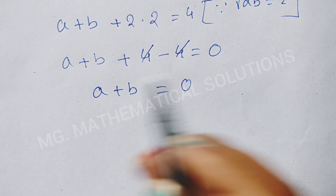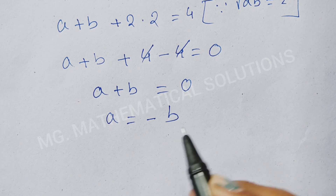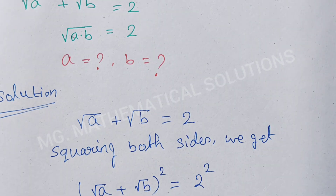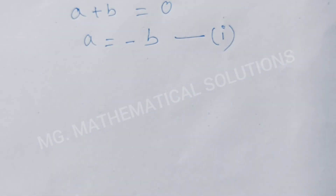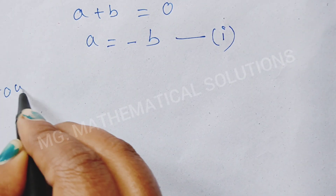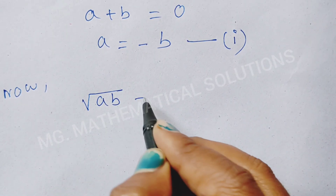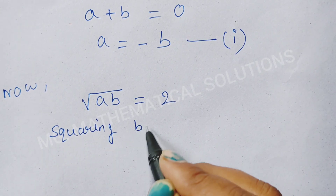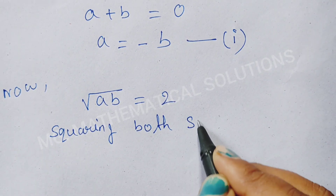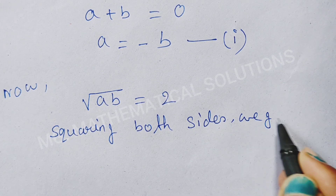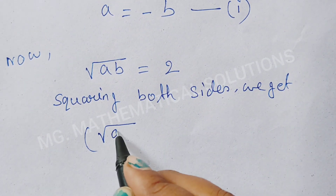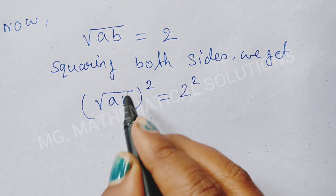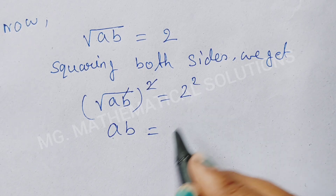Now we write this term to the right side: a equal to minus b. We also use the second given equation: root of a times b equal to 2. Squaring both sides, square and root cancel, so a times b equal to 4.